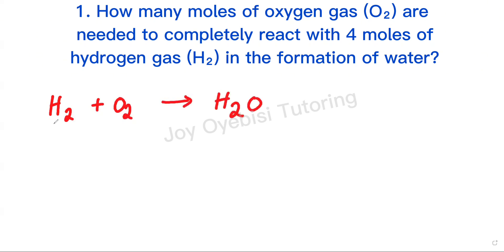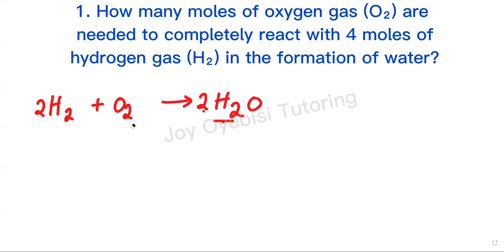Then balance the equation. There are 2 hydrogens on the left, 2 on the right. There are 2 oxygens on the left, 1 on the right. So make that 2. We also have to add 2 in front of hydrogen, and that balances the equation.